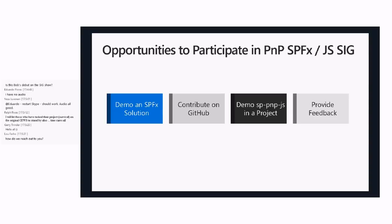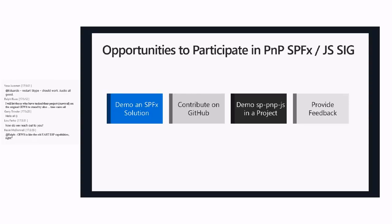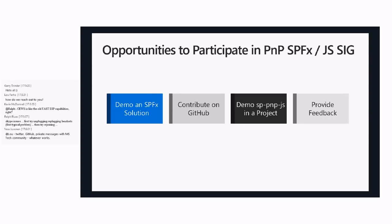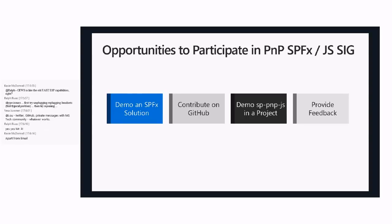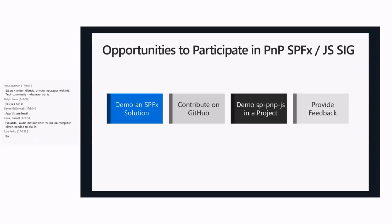You can always contribute on GitHub through issues, through contributing pull requests, or just providing general feedback on all of the things we do — feedback on these calls, feedback on the libraries, feedback on SharePoint framework. All of that feedback is really valuable and really taken to heart by us. We can't always act on every piece of feedback immediately, but the Patterns of Practice core team definitely discusses all your feedback and does our best to adapt and change and evolve what we're doing based on what we hear from folks.